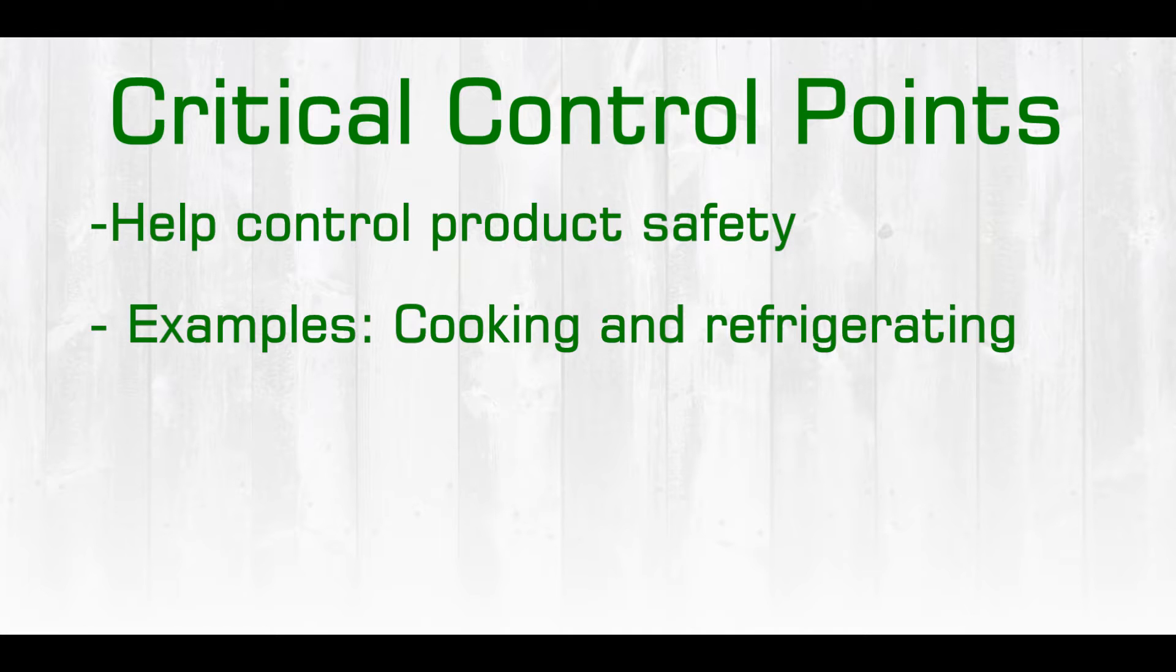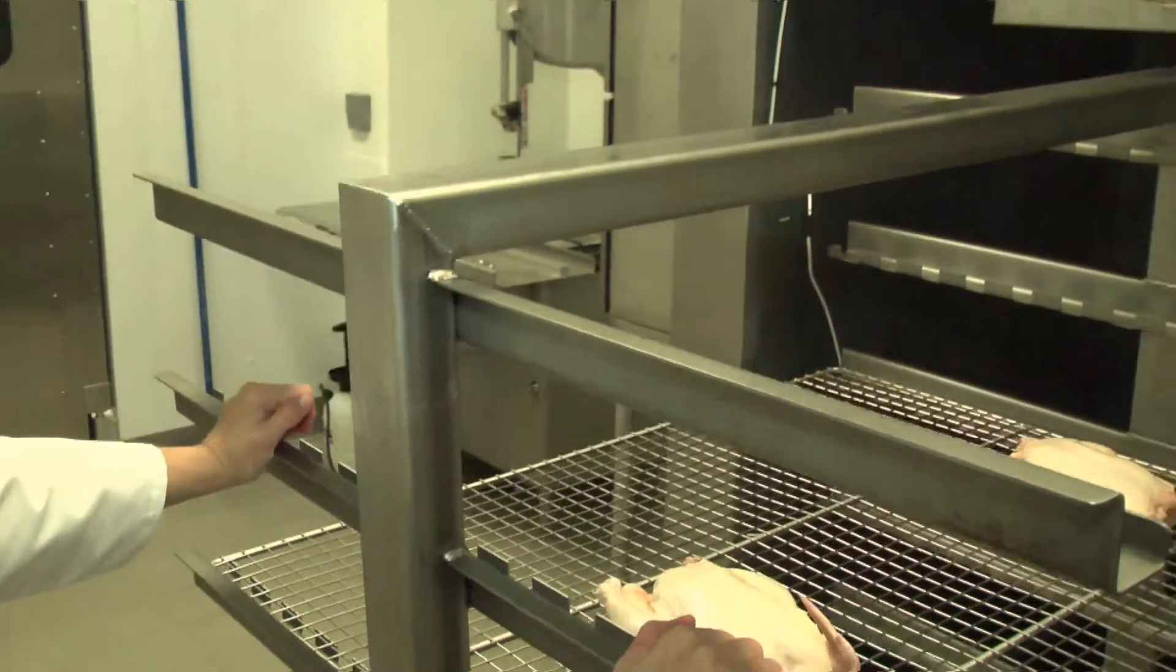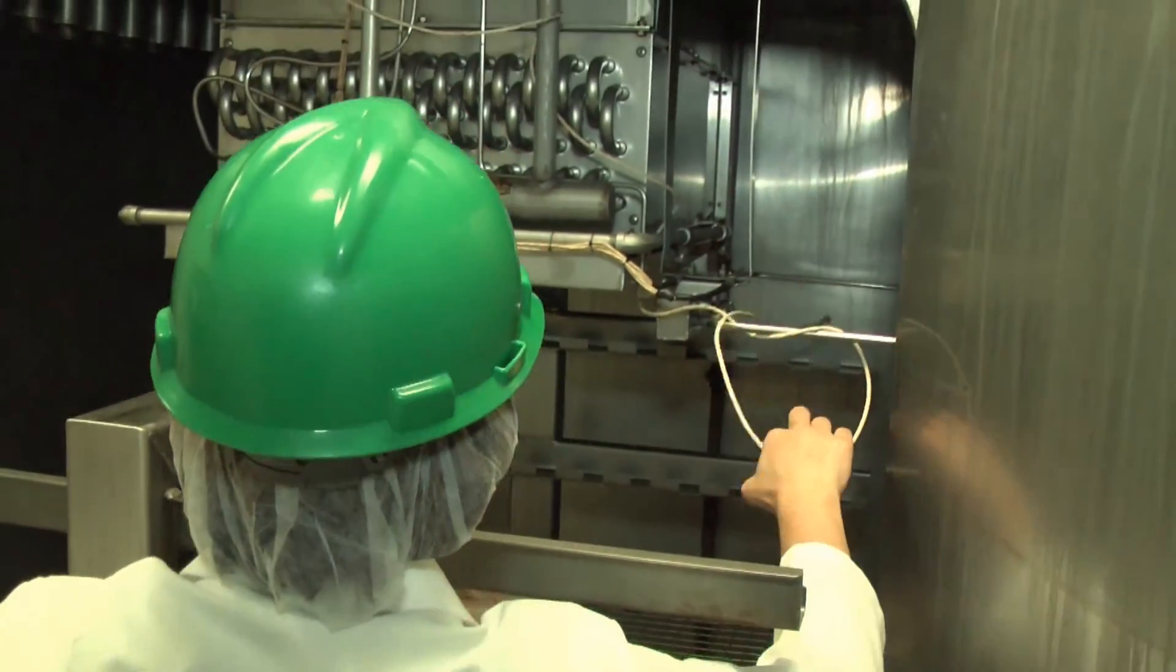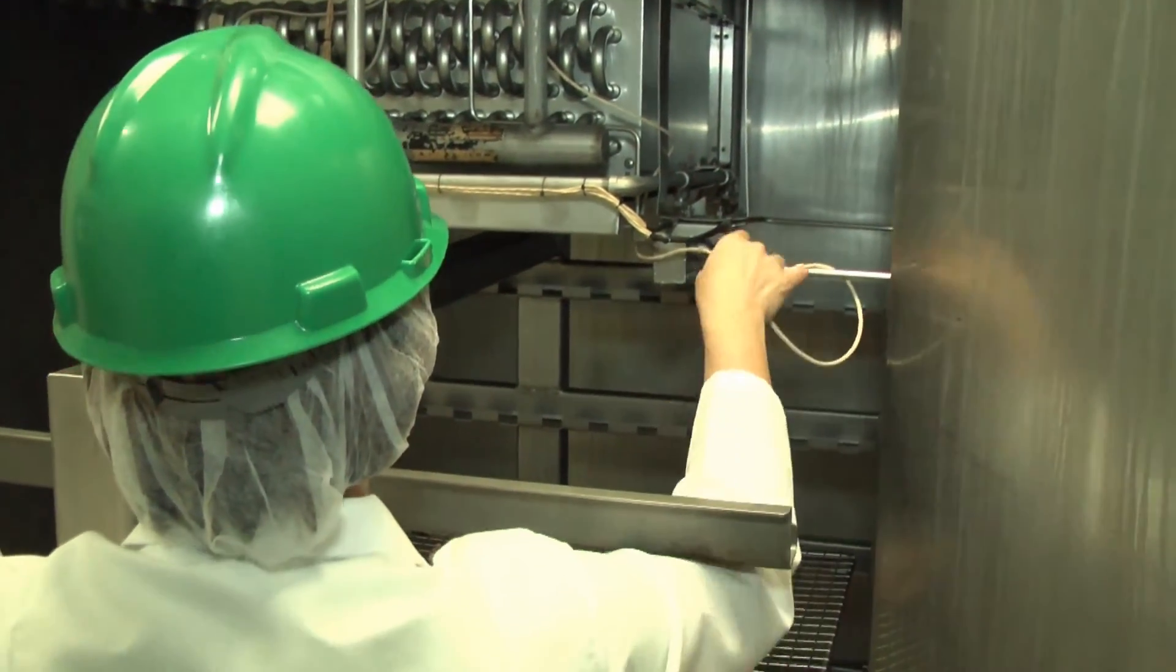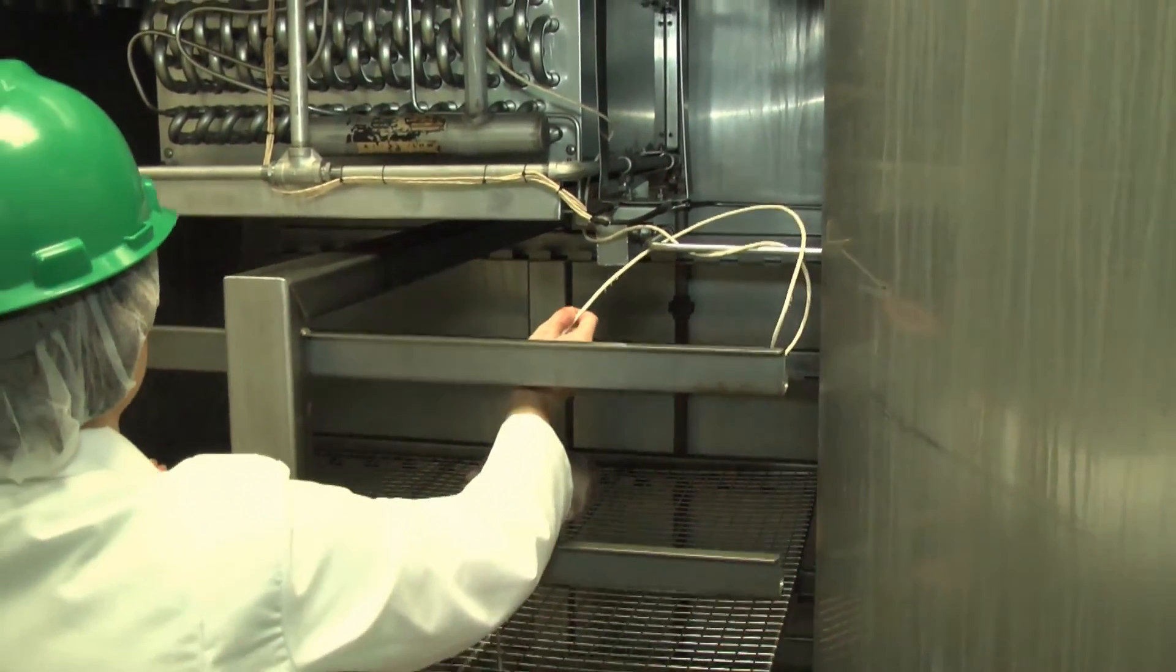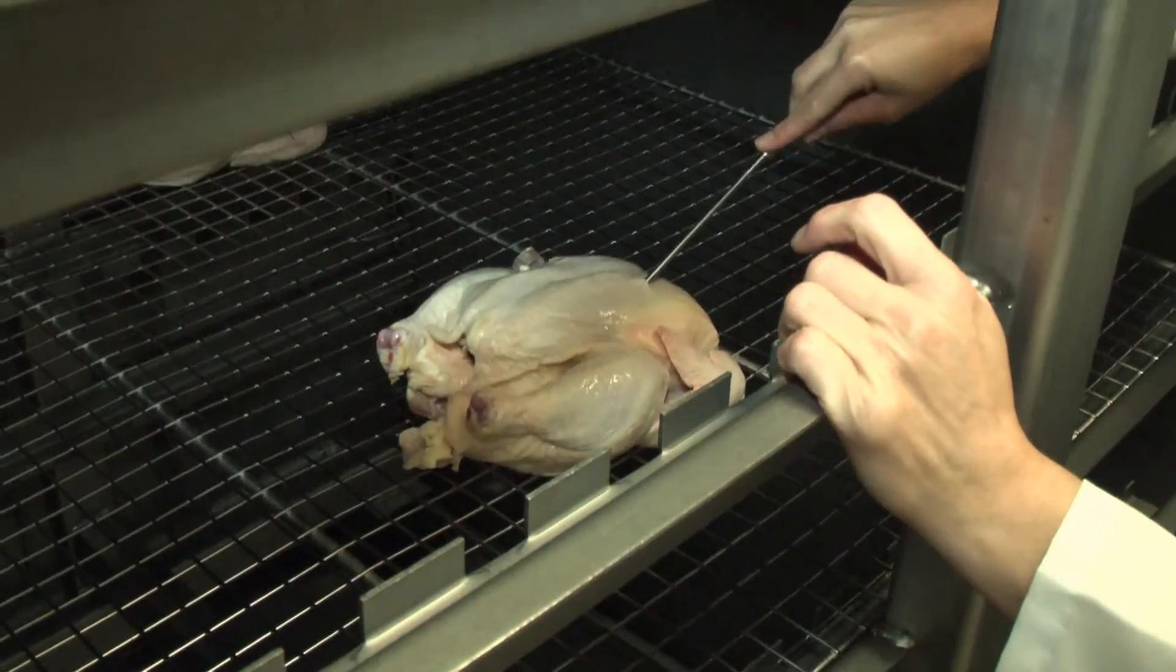Specific examples of critical control points would be, since we know the bacteria require a certain amount of time at a certain temperature in order to grow and thrive, we can utilize a specified heat process at a given time and temperature that is designed to destroy a specific microbiological pathogen, such as E. coli or Salmonella.